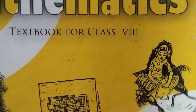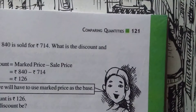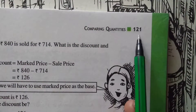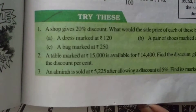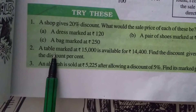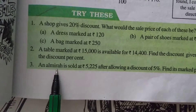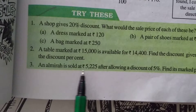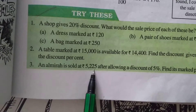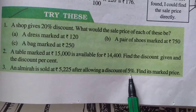Good morning students. In today's class, in the chapter Comparing Quantities from page 121, we will continue with the try-this third problem. In the last class we have done up to the second question of try this. Today we will start with the third one: an Almira is sold at rupees 5,225 after allowing a discount of 5%.